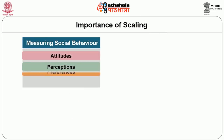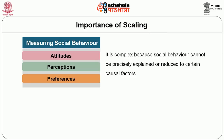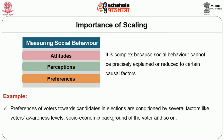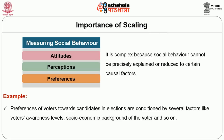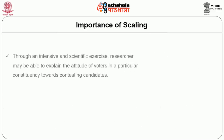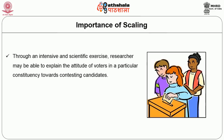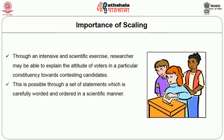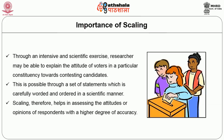However, measuring social behavior — which includes attitudes, perceptions, preferences or opinions — is difficult because of its complexity. It is complex because social behavior cannot be precisely explained or reduced to certain causal factors. For example, preferences of voters towards candidates in elections are conditioned by several factors like voter awareness levels, socio-economic background of the voter, profile of contesting candidates, parties, and so on. Hence, it is difficult to single out a factor for the preference of a particular candidate by a specific voter. However, through an intensive and scientific exercise, researchers may be able to explain the attitude of voters in a particular constituency towards contesting candidates. This is possible through a set of statements which are carefully worded and ordered in a scientific manner. Scaling therefore helps in assessing the attitudes or opinions of respondents with a higher degree of accuracy.